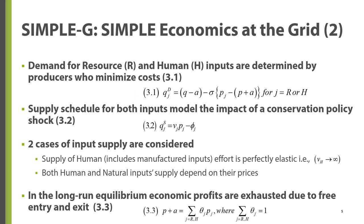We consider two cases of input supply. In the first case, the price elasticity of human-produced inputs is infinite, meaning that at a given wage rate, demand for human inputs fully determines the use of human inputs. The second case relaxes this assumption, where both input prices are determined within the model. We also use the zero-profit condition in equation 3.3, which implies that in the long run, all economic profits are captured by both inputs.